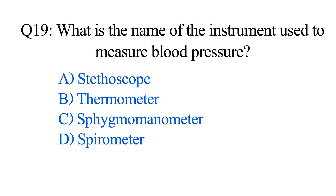Question number nineteen. What is the name of the instrument used to measure blood pressure? Option A: Stethoscope. B: Thermometer. C: Sphygmomanometer. D: Spirometer. The correct option is Option C: Sphygmomanometer.